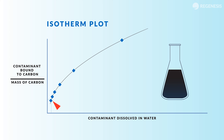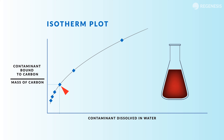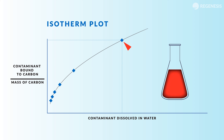As more and more contaminant enters the system with a fixed amount of carbon, we move farther to the right on the isotherm plot, which indicates that relatively less contaminant is being bound onto the carbon, with a higher concentration remaining in the water. As we go farther to the right and the carbon begins to reach its capacity, any further increases in contaminant will remain in the water.